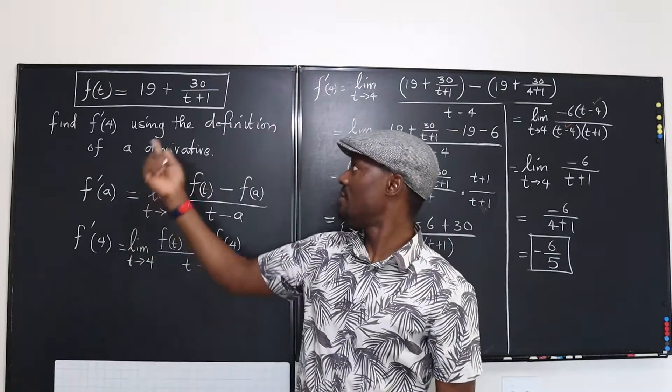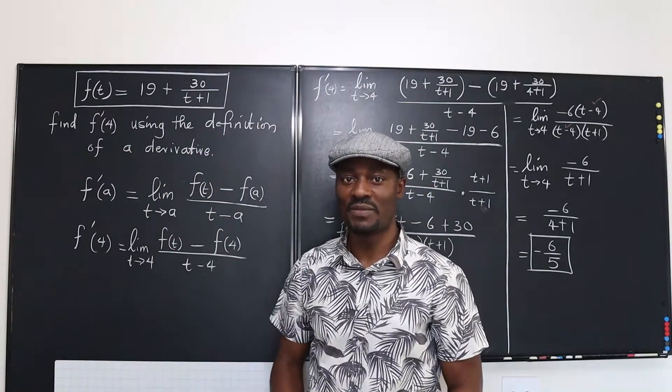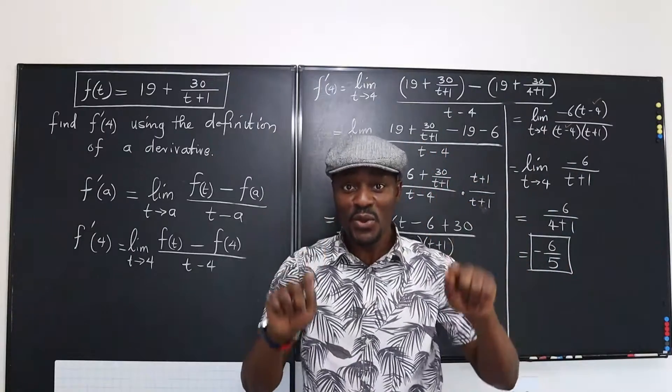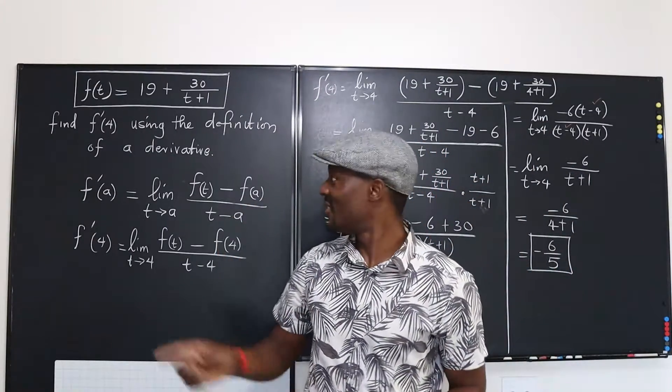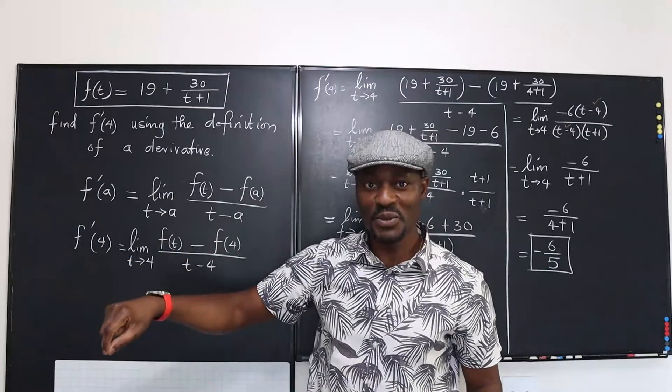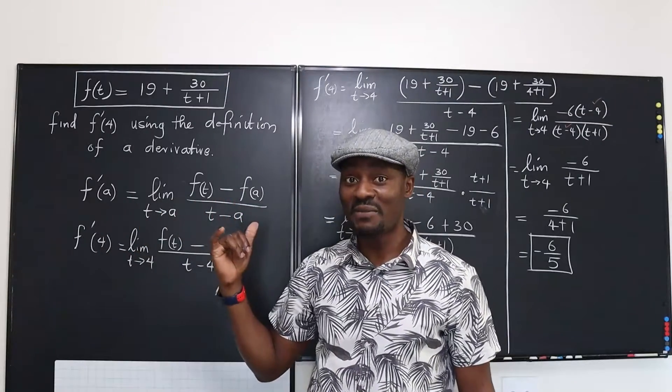Remember, if you know how to differentiate, you could have differentiated and your answer will be faster. It would be negative 30 over t plus 1 squared. Actually, that's the derivative of this function using the formula, but now we're supposed to use the definition.